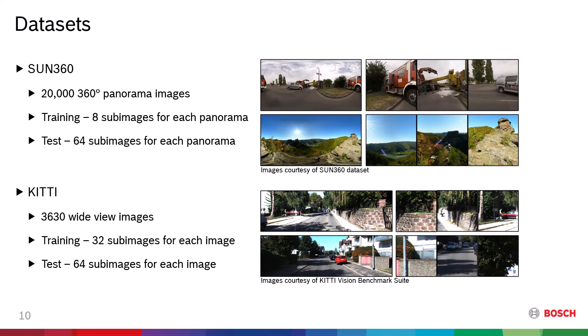We employed Sun360 and KITTI datasets in our work as the ground truth sun directions are available for both datasets. Sun360 is a set of 360-degree panoramas. We collected 20,000 daytime outdoor panoramas from the dataset.